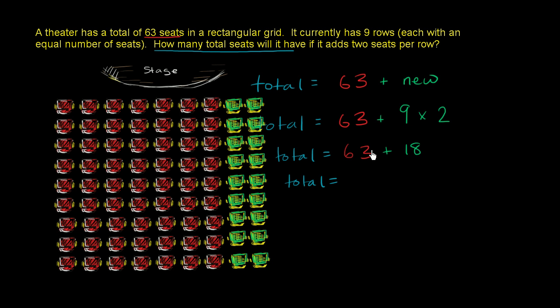Let's see, 8 plus 3 is 11. 60 plus 10 is 70. 70 plus 11 is going to be 81. I have 81 seats. I now have 9 rows with 9 seats each, which gets me 81 total.